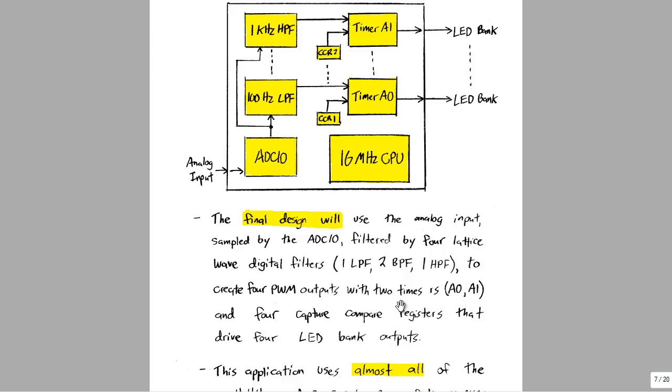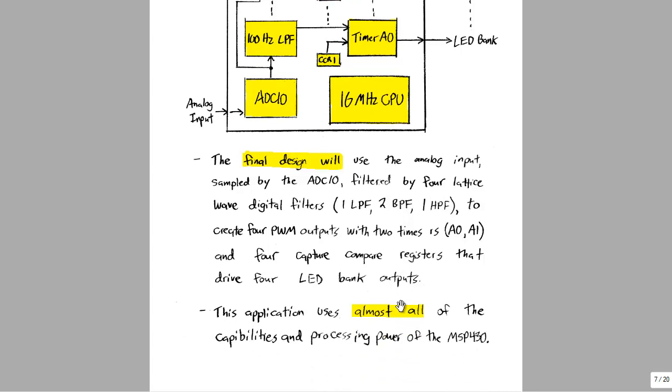You might be wondering how we can implement four pulse width modulation outputs with only two timers. It's not dependent on the timer but on the capture compare register. There are actually five capture compare registers we can use in this variant of the MSP430. This application uses almost all of the capabilities and processing power of the MSP430.